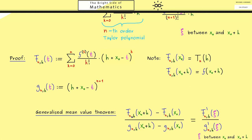At this point you should see why this helps with the proof of Taylor's theorem — in the numerator we have the Taylor polynomial and also the function f at position x0 plus h. In other words, if we bring the denominator to the other side, we should find the remainder term on the right-hand side, and this is exactly what we want to do.